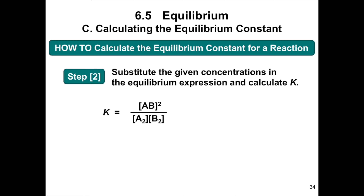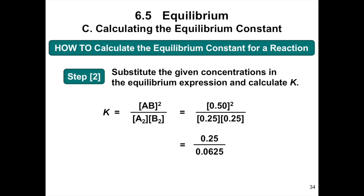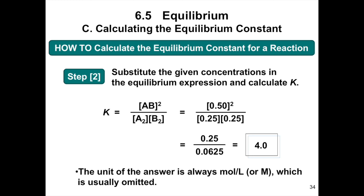Substituting the given concentrations into the equilibrium expression: the concentration of AB is 0.50, and the concentrations of A and B are each 0.25. Performing the calculation, we get 0.25 divided by 0.0625, which equals 4. The unit of the answer is moles per liter or molar, which is usually omitted. So K = 4.